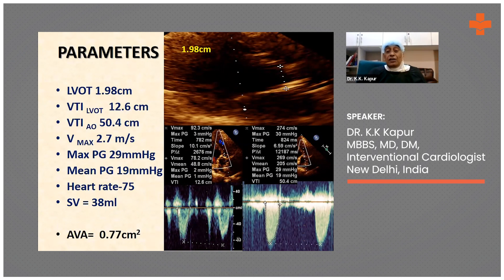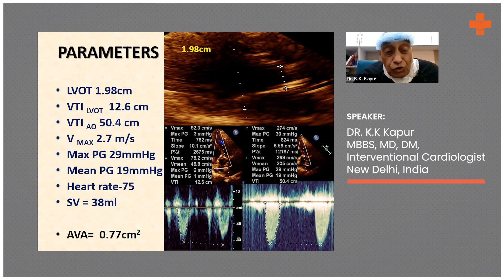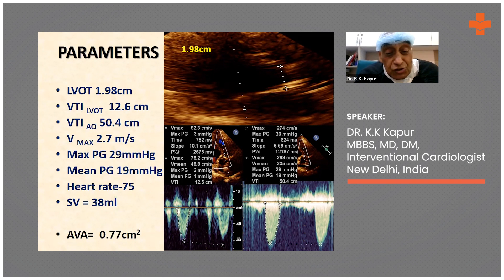We took the LVOT diameter in the parasternal long axis view in mid-systole — that was 19.8 mm. The velocity time integral at the LVOT using the apical five-chamber view was 12.6 cm. The VTI across the aortic valve was 50.4 cm. The Vmax — that is the peak velocity across the aortic valve — was only 2.7 m per second, with a peak gradient of 29, a mean gradient of 19, a heart rate of 75, and a stroke volume of only 38 ml. The calculated aortic valve area by the continuity equation was 0.77 cm².